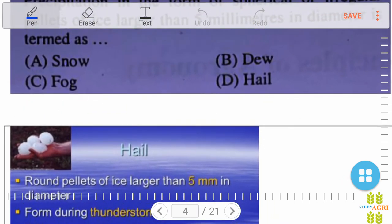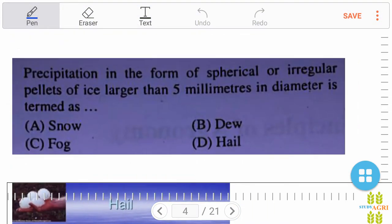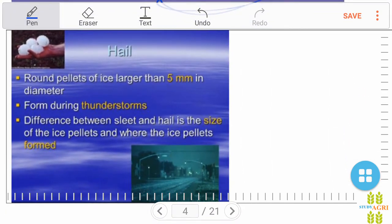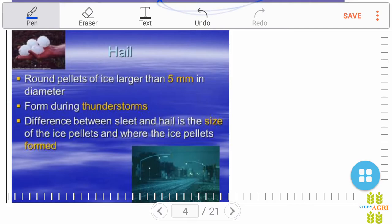Precipitation in the form of spherical or irregular pellets of ice larger than 5 mm in diameter is termed as snow, fog, dew, or hail? Right answer is D, hail. Hail is round pellets of ice which are larger than 5 mm in diameter and form during thunderstorms. The difference between sleet and hail is the size of ice pellet and where ice pellets form.